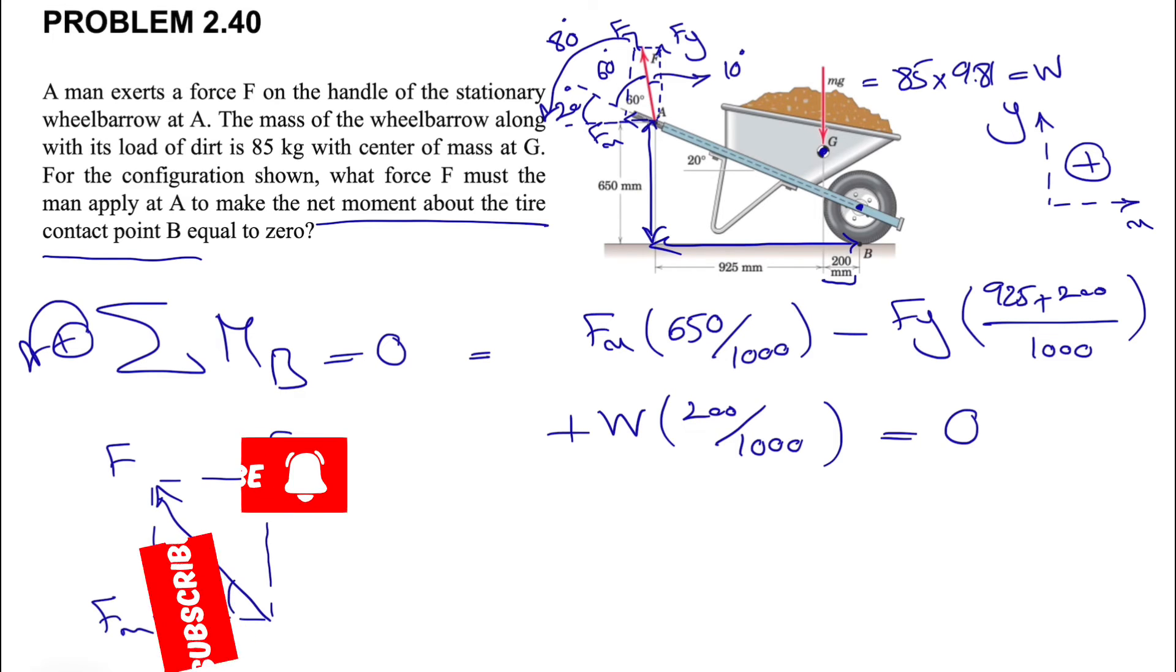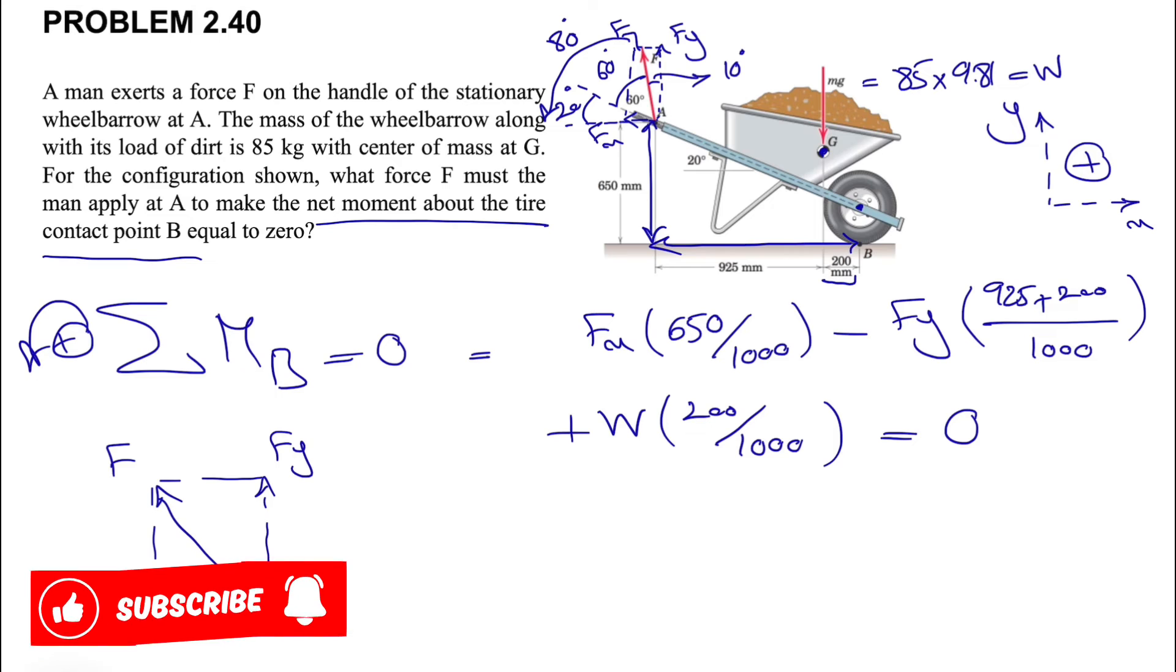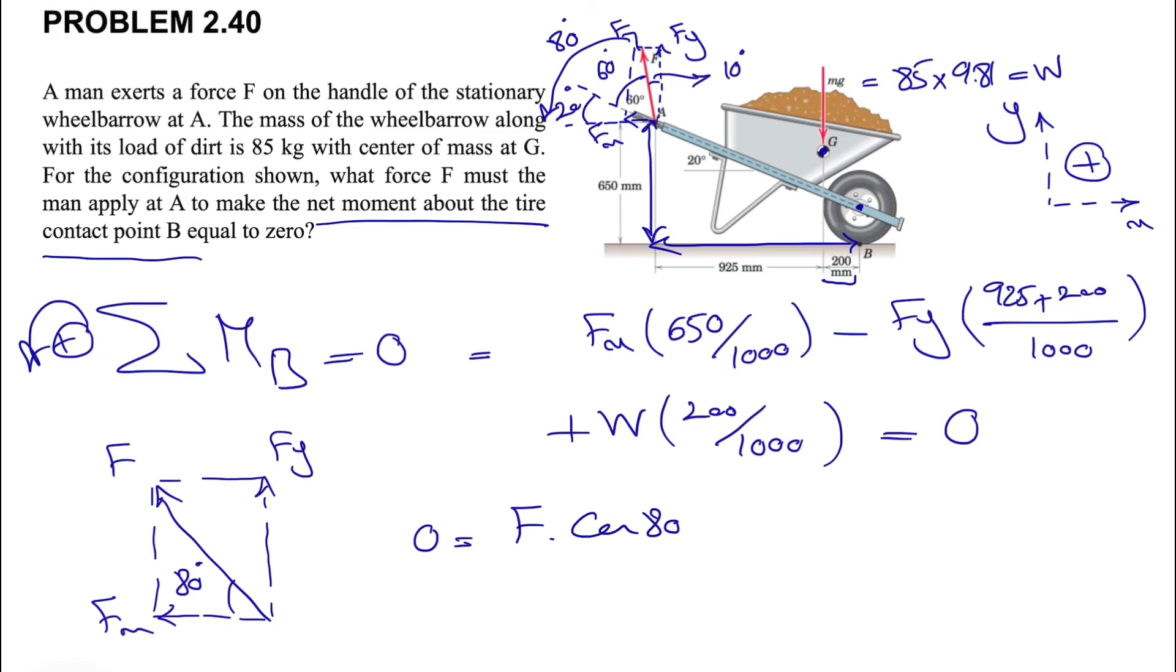Now let's see what we have for Fx and Fy. What we have here for F is that we figured out this angle is 80 degrees. If that's the case, we have zero equals Fx, which will be F, the unknown in this question, times the cosine of 80.